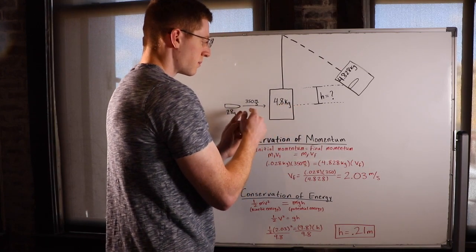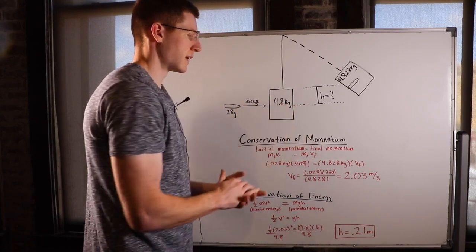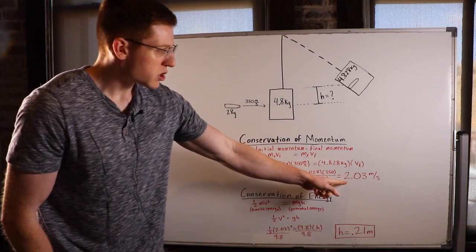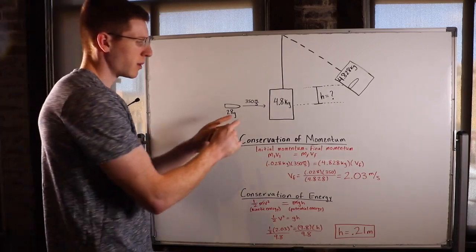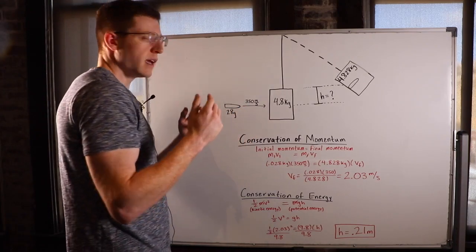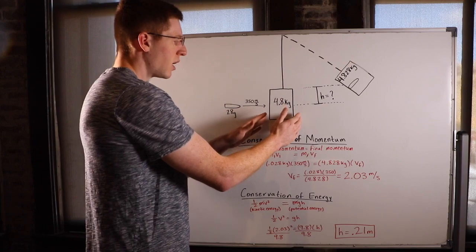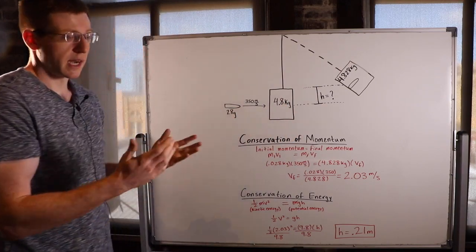In other words, how fast is the bullet and block combination moving at the end? And then when you solve for that, you get 2.03 meters per second. So much smaller than 350 meters per second. And that makes sense. This heavy block is going to slow this bullet down a lot.